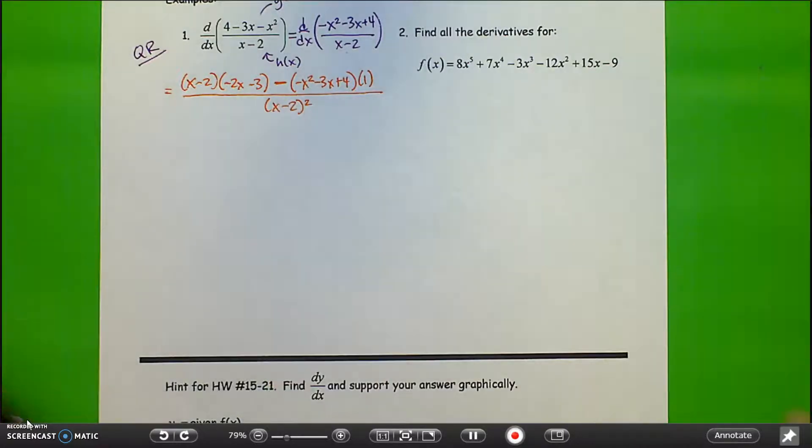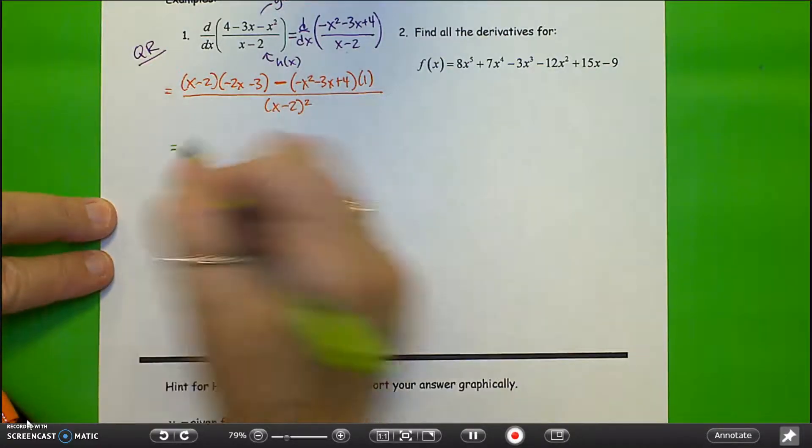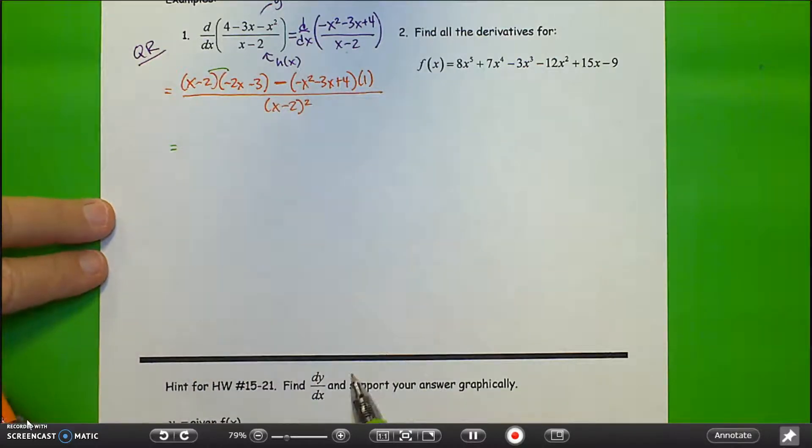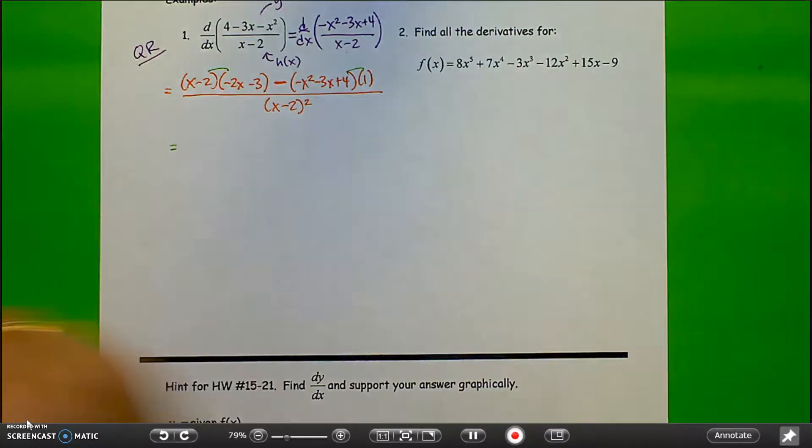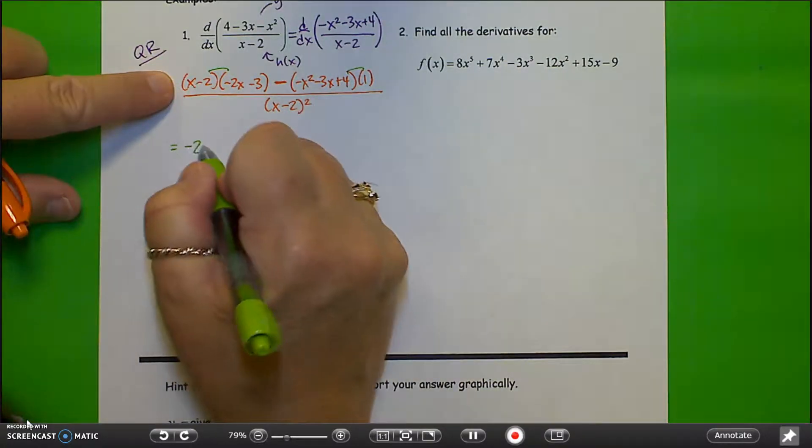all over the bottom squared. And now I just need to clean this up. So I'm going to need to foil these, and then distribute the 1. So, foiling, my first term, minus 2x squared.